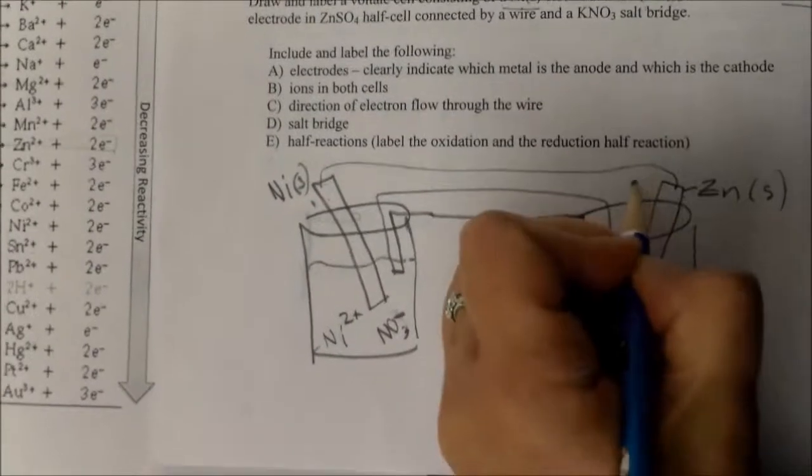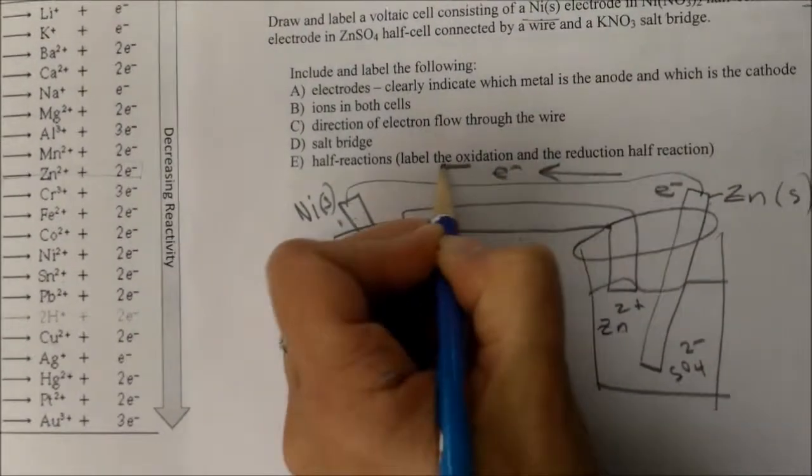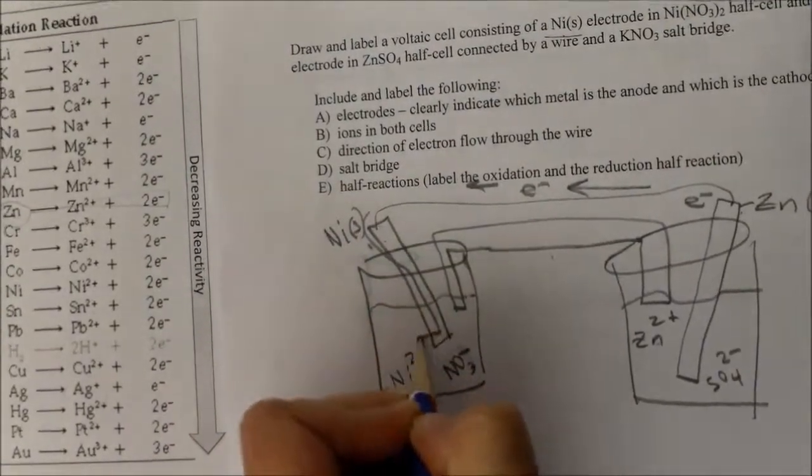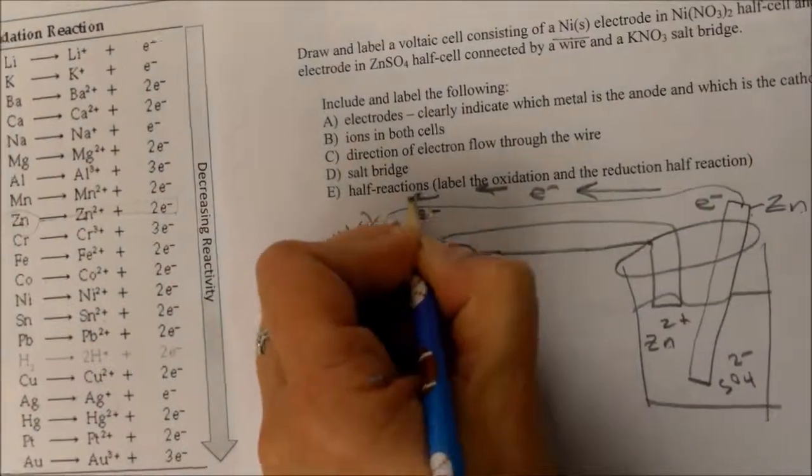zinc will give off electrons which will flow through the wire and they will come all the way down and react with a nickel ion. So that's the direction of electron flow.